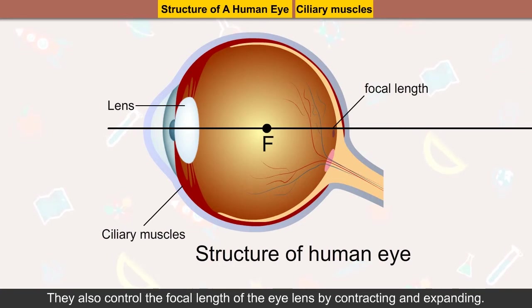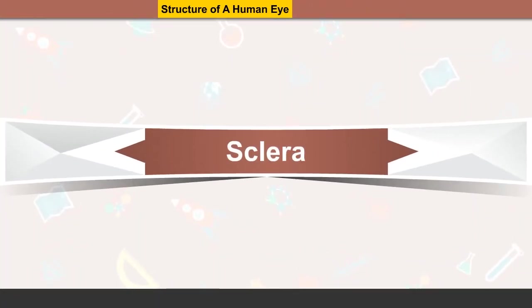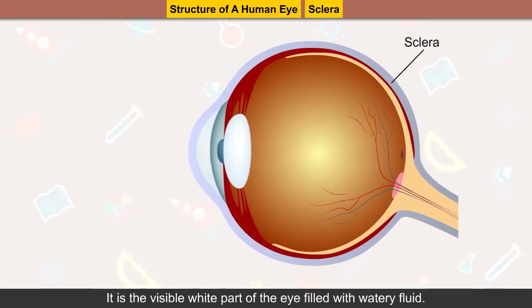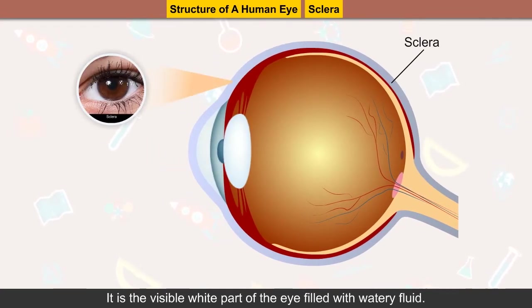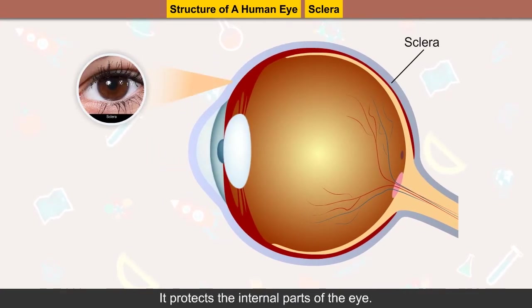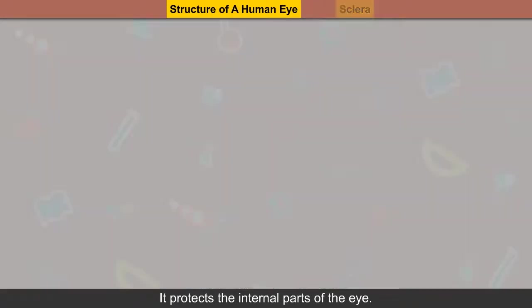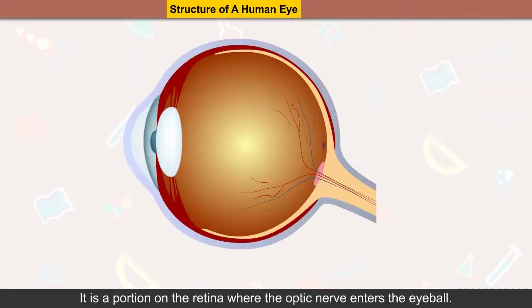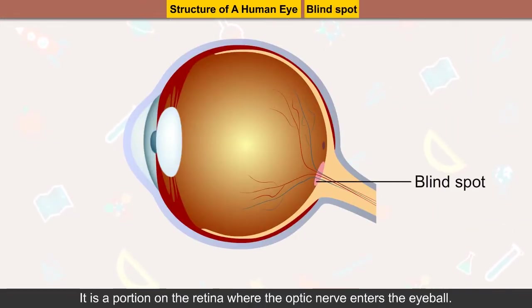Ciliary muscles: it is a ring of muscles which holds the lens in position. They also control the focal length of the eye lens by contracting and expanding. Sclera: it is the visible white part of the eye filled with watery fluid, and it protects the internal parts of the eye.